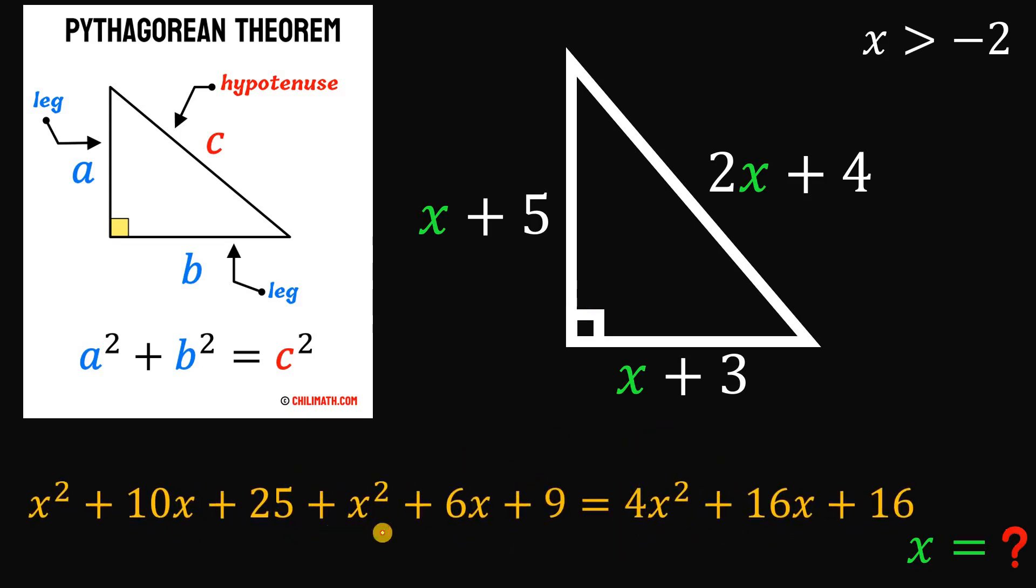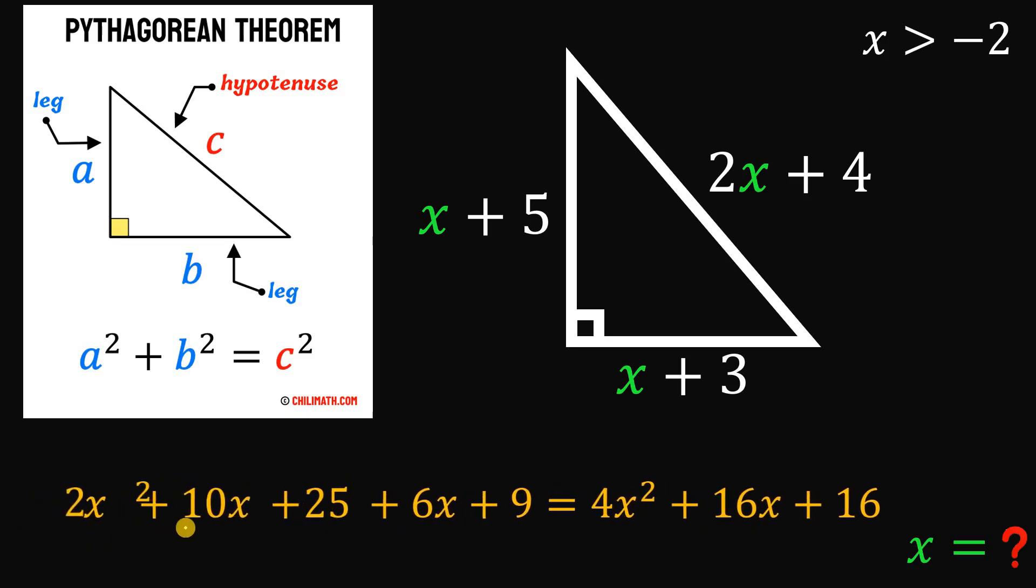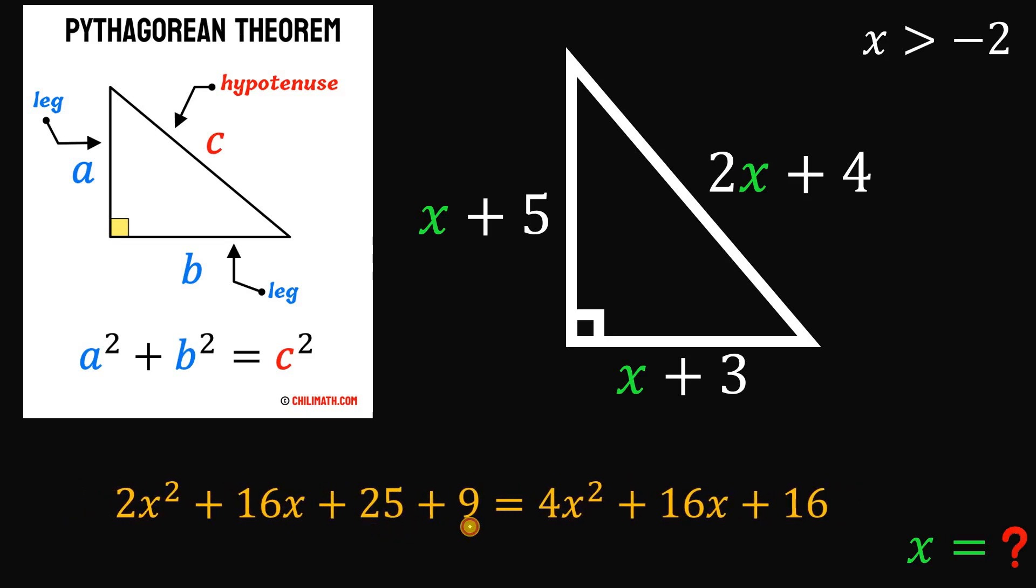Now, at this point, let's combine like terms. We have x squared and x squared. So if we combine this, we have 2x squared. Next, 10x and 6x. So we have 16x. 25 plus 9. This is 34.